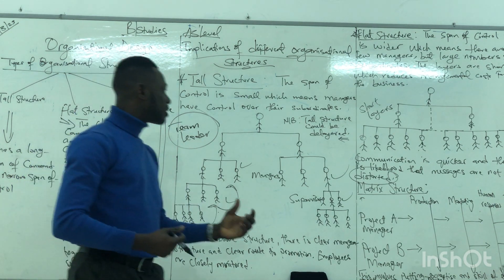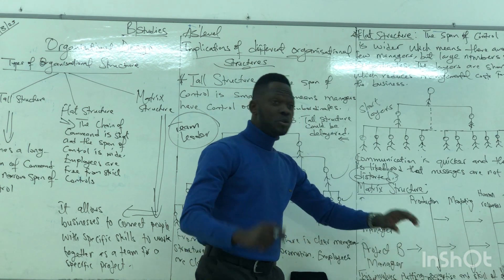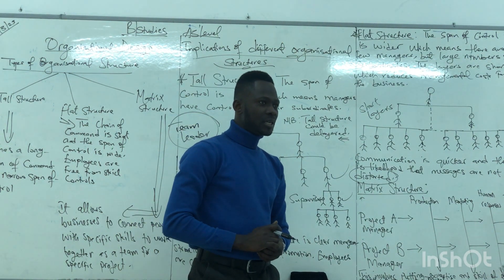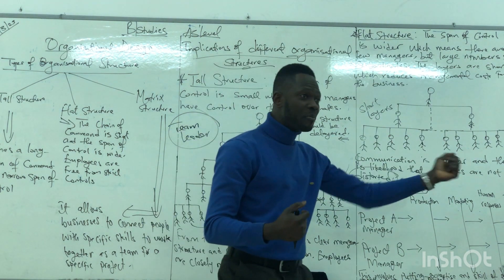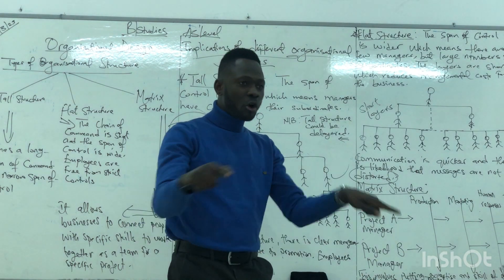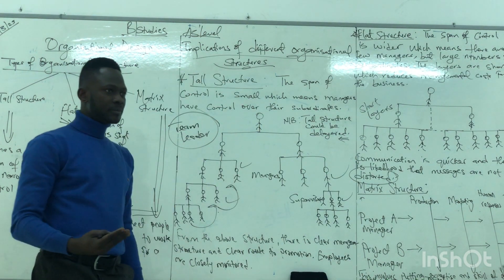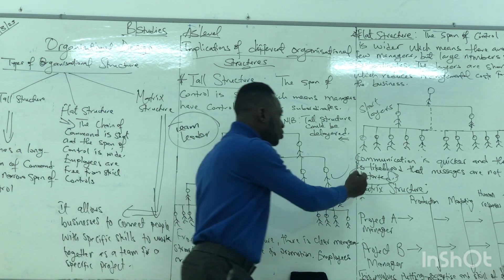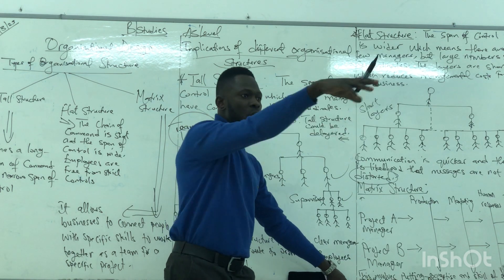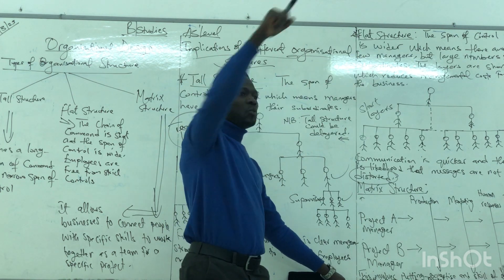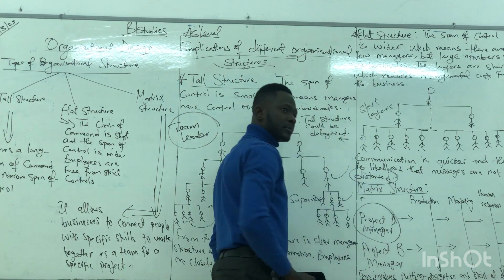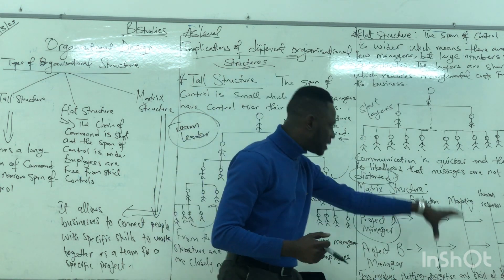Most of the time, the matrix structure is considered the best structure, because you are combining people with different expertise and skills to work out a project, so the project outcome will be of quality. Just imagine taking an accountant who knows the job well, a production manager, a logistics manager — people from different departments who are experts in their area — to complete the project together. It will be perfect.